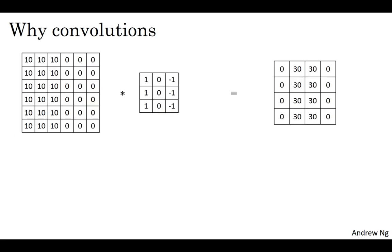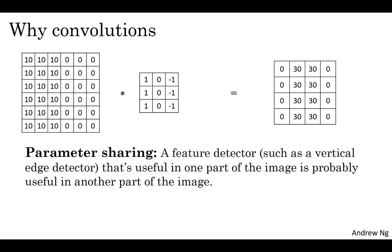And the reason that a conf net has relatively few parameters is really two reasons. One is parameter sharing. And parameter sharing is motivated by the observation that a feature detector, such as a vertical edge detector, that's useful in one part of the image, is probably useful in another part of the image.